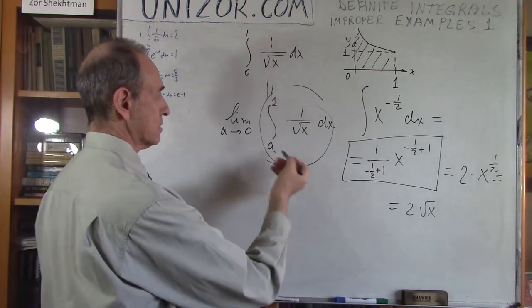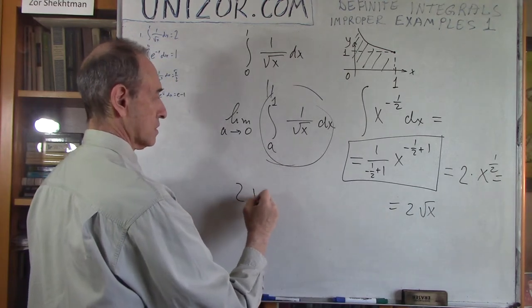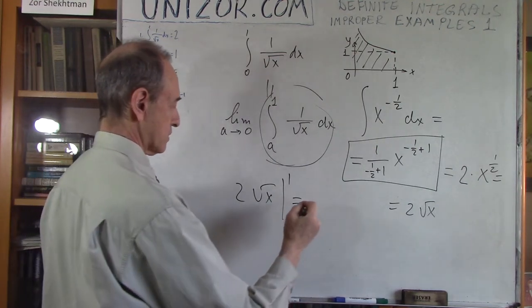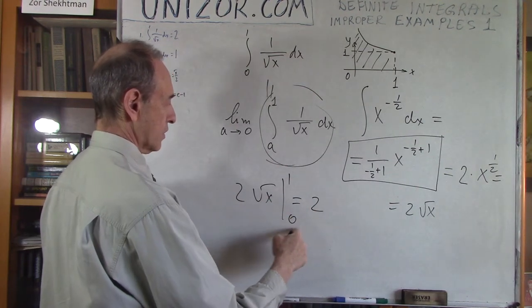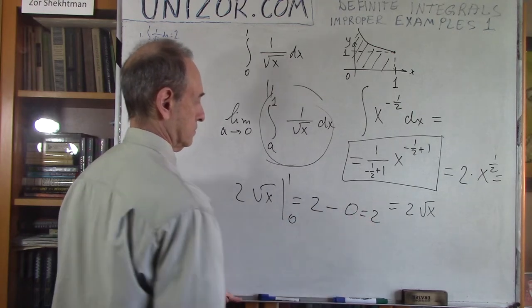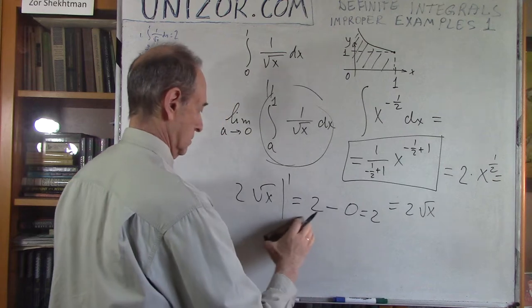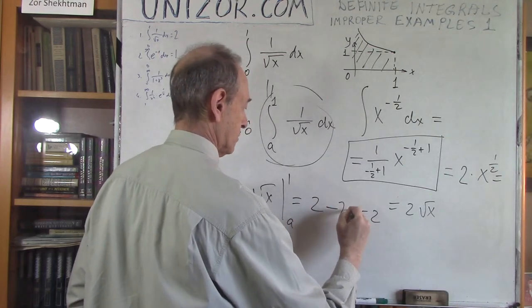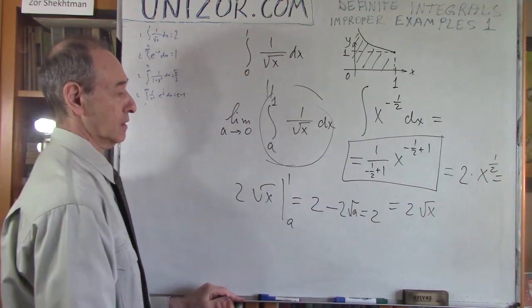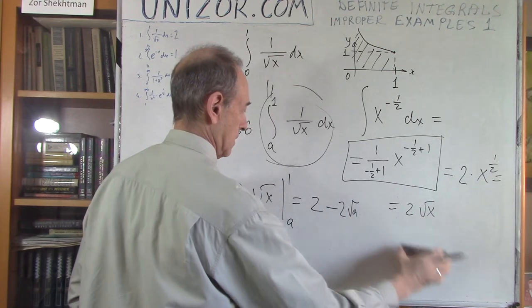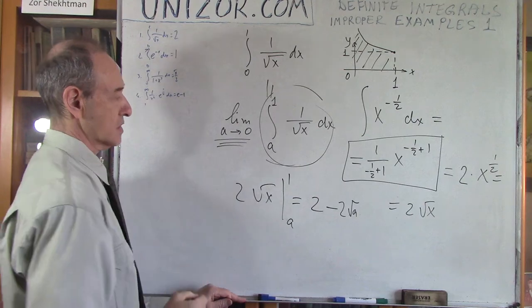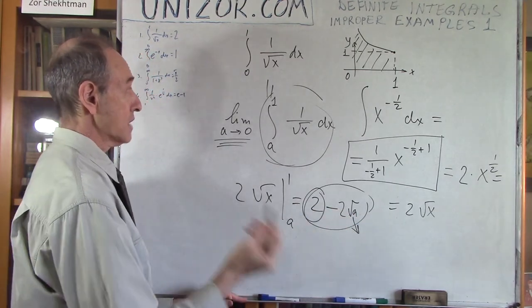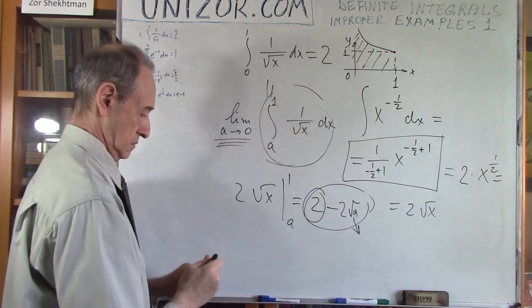So then we substitute: 2 times square root of x evaluated from a to 1, using the Newton-Leibniz formula. For 1 we get 2, and for a we get minus 2 times square root of a. Now, as a goes to 0, this thing obviously converges to 2, because 2 times square root of a is infinitesimal. So the answer is 2.